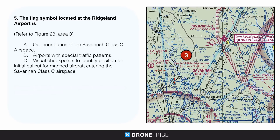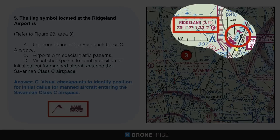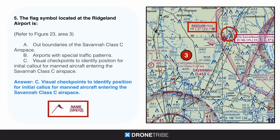Question five: the flag symbol located at Ridgeland Airport — referring to figure 23, area 3. You'll see this flag symbol, which indicates a visual checkpoint to identify the position for the initial call-out for manned aircraft entering the Savannah Class C airspace. This is something you don't necessarily need to monitor in the real world, though ideally you'd have a radio to know aircraft are coming in. For the test, you just need to know what the symbol means.